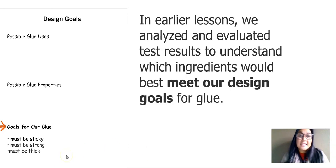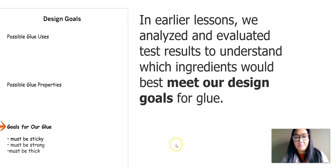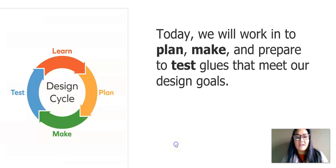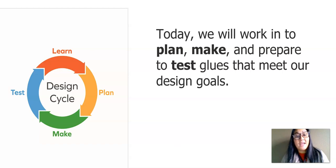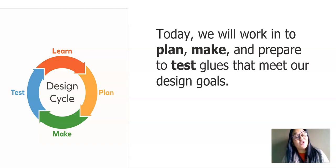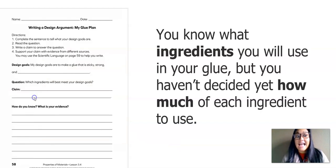Here you can see our design goals poster. The arrow is pointing to our goals for glue: our glue must be sticky, must be strong, and thick. Next, we will work to plan, make, and prepare to test glues that meet our design goals. We're going back to the design cycle — we're going to plan, we're on the make, and prepare to test.